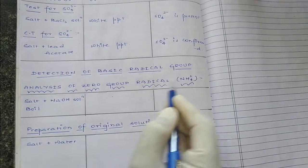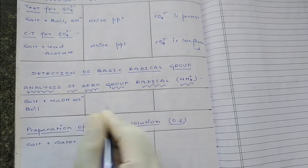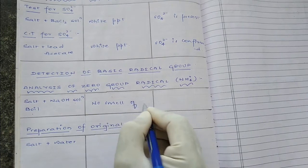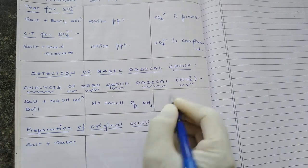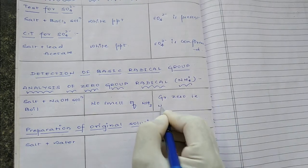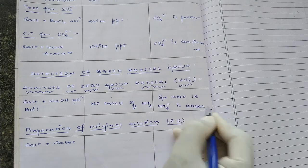Analysis of zero group radical — ammonium: salt plus NaOH solution, boiled. Observation: no smell of ammonia. Therefore the inference is group zero — ammonium NH₄⁺ is absent. After that, we will go for preparation of the original solution. In the preliminary test we conducted the solubility test and found the given salt is crystalline and soluble in water.